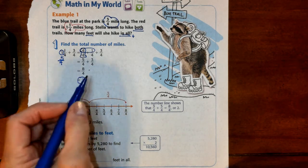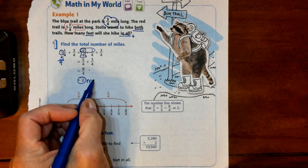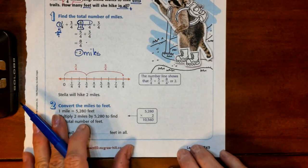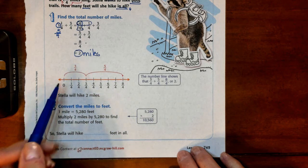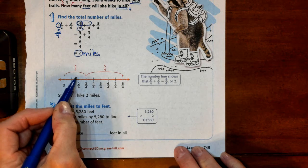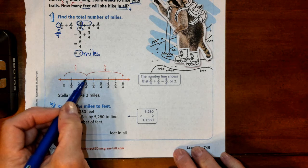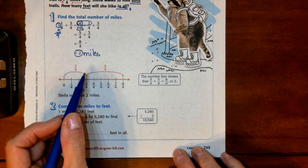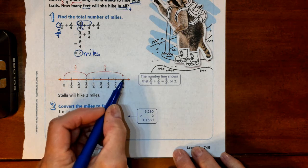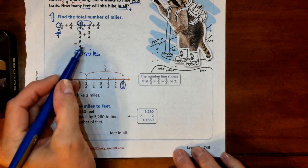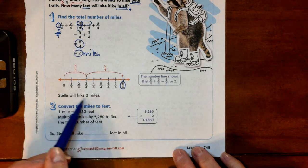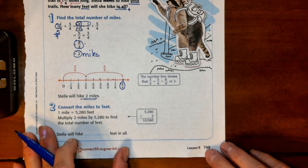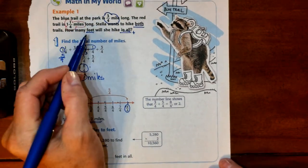That gets us 2 miles, and they've shown it to you on a number line as well. They've shown you three-fourths which is the blue trail, and they've hopped 1, 2, 3 quarters from there to there. And then they showed you five-fourths, they hopped 5 more times—1, 2, 3, 4, 5—and that gets us all the way to eight-fourths, which is what we had here. And then they converted it as well. So Stella will hike 2 miles, but that's only the first part of our problem. They asked us for how many feet.